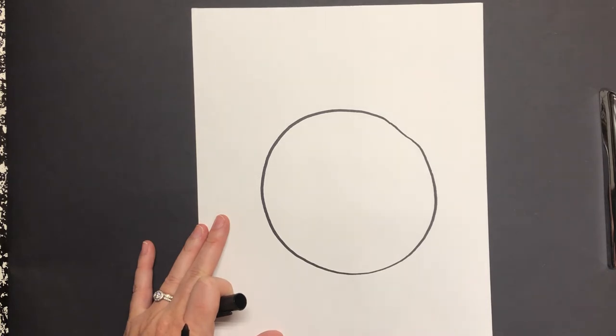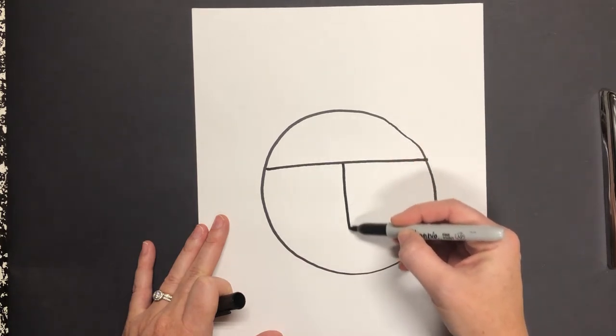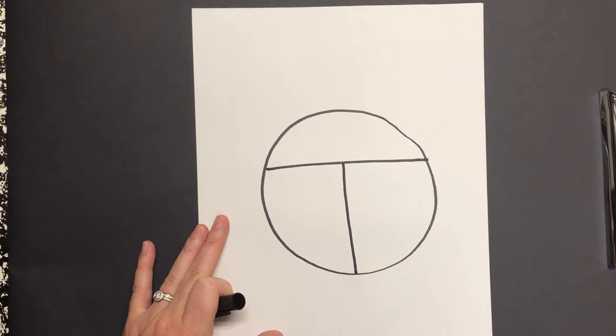The next step we are going to do is the letter T. I'm going to fill my circle up with the letter T.